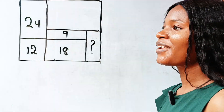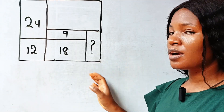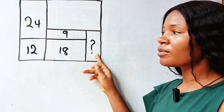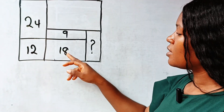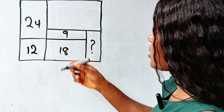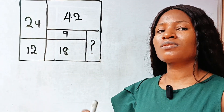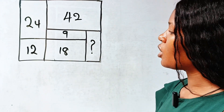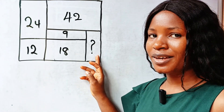Hello, welcome back to my channel. Today we have an amazing question to solve. This is a rectangle, not drawn to scale. We are asked to find the area of this portion, given that the area of this part is 12, this one is 24, this is 18, this is 9, and this is 42. We are asked to find the area of this portion. We are going to start by figuring out how to form equations that will help us get to this.